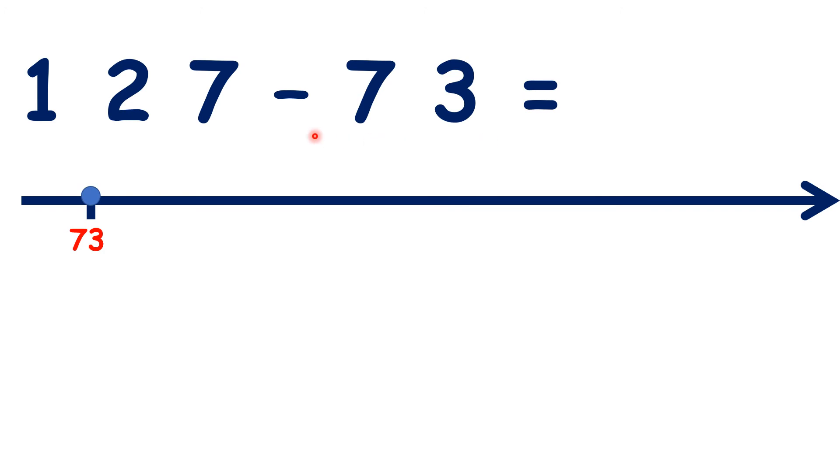So pause the video again, and try 127 minus 73. From 73, we need 7 more to get to 80, to get to the next multiple of 10. Then, to get to 100 from 80, we need 20 more. And from 100, to get to 127, we need 27 more.